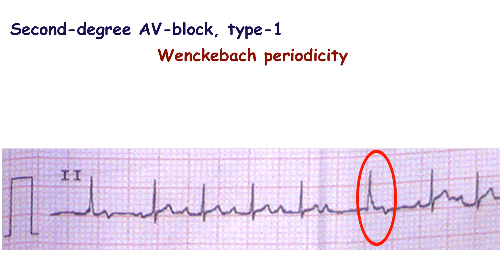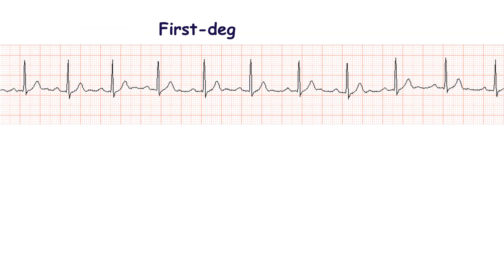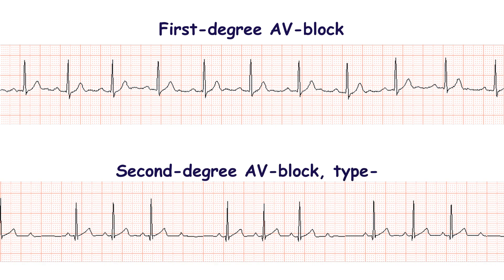The PR interval after the escape junctional contraction is the shortest. This should be differentiated from first degree AV block and second degree type 2 AV block. In first degree AV block, all P waves are conducted with prolongation of the PR interval. In second degree type 2 AV block, the PR interval is constant in all complexes with periodic non-conduction of the P wave.